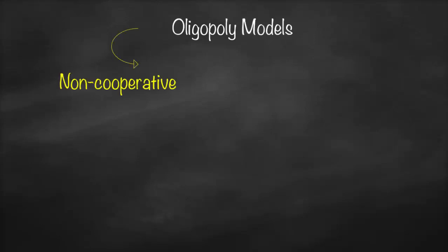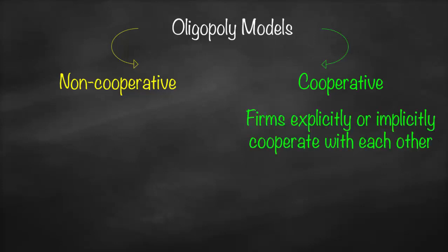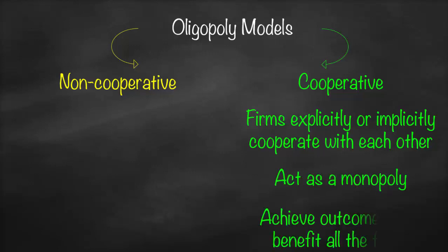For oligopoly models, we have two types: either non-cooperative or cooperative. For cooperative firms, they explicitly or implicitly cooperate with each other, which means they act as if it's one large firm — acting as a monopoly. The major target is to benefit all firms and maximize their profit.